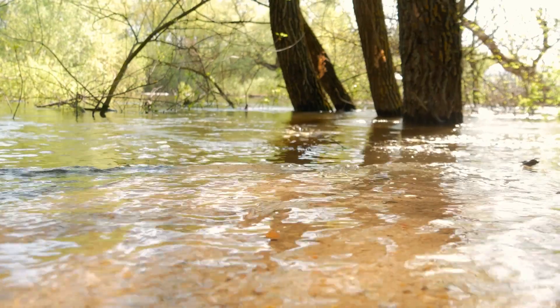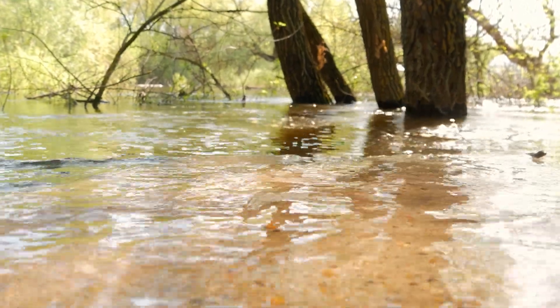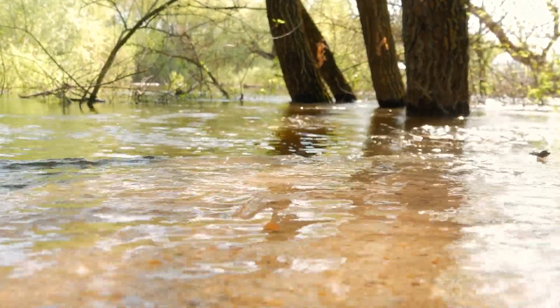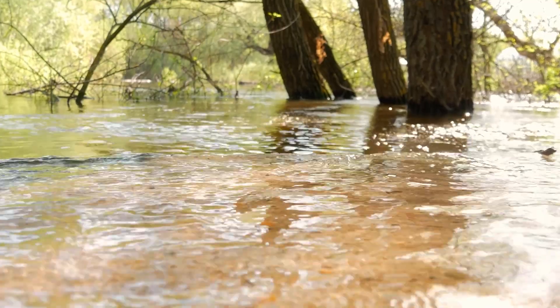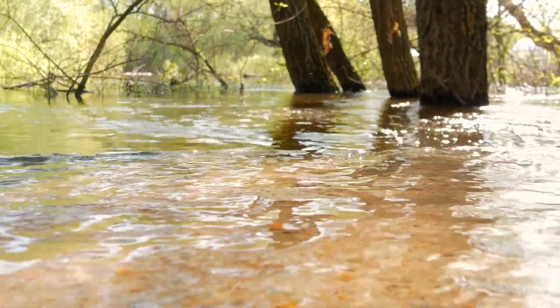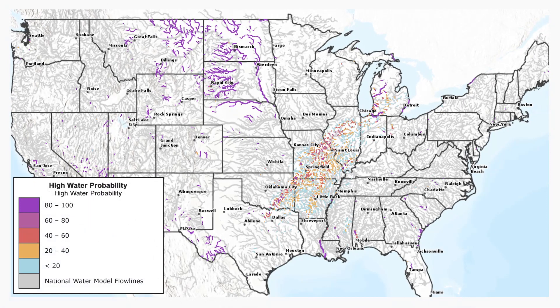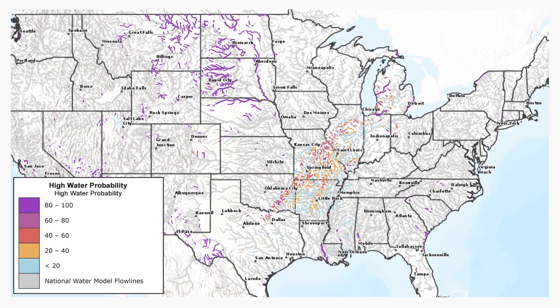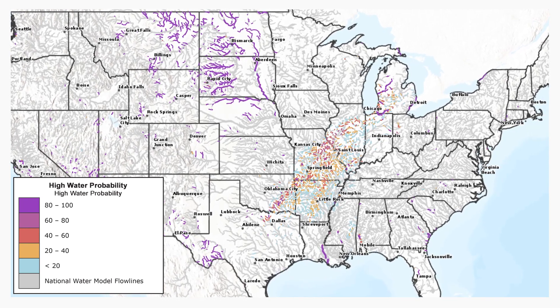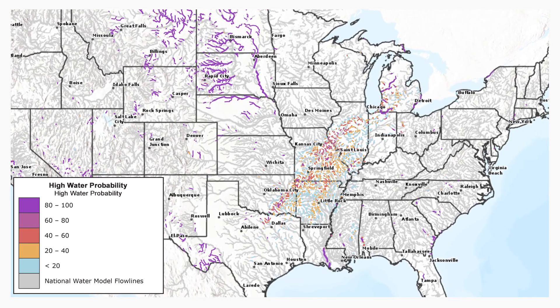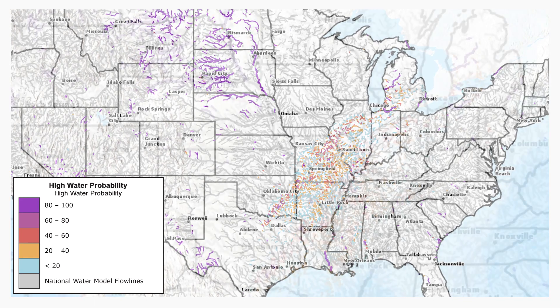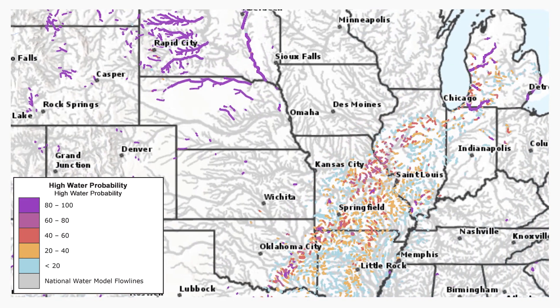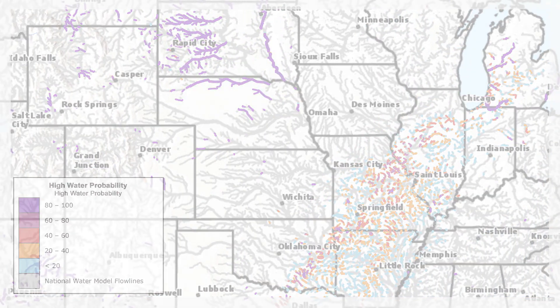The 12-hour high water probability forecast provides a probabilistic forecast visualization depicting the chance for stream reaches to reach or exceed the estimated high water threshold over the next 12 hours. Stream reaches are shown if high water conditions are expected to be met or exceeded during the next 12 hours. Colors indicate the probability of high water conditions.